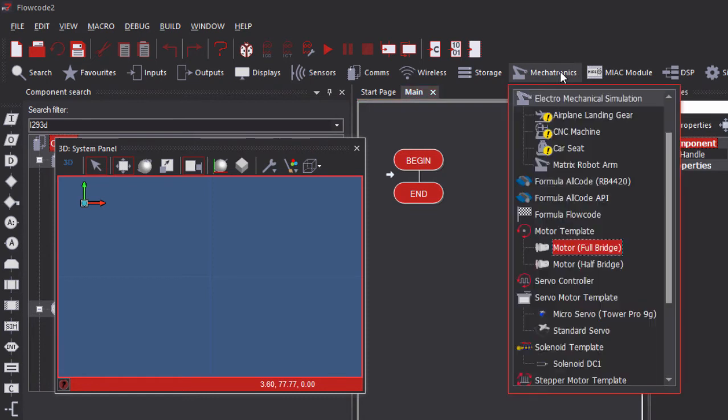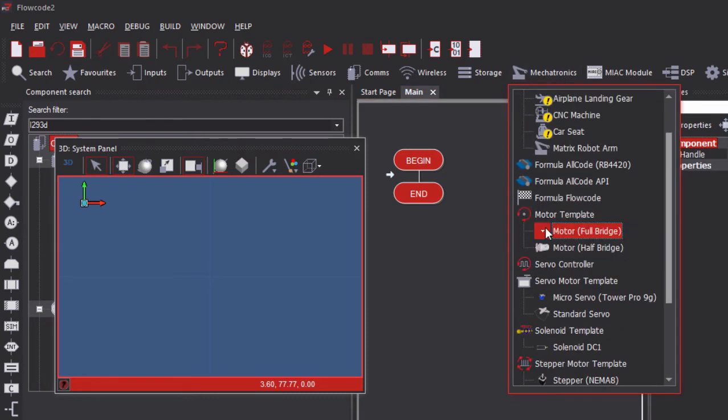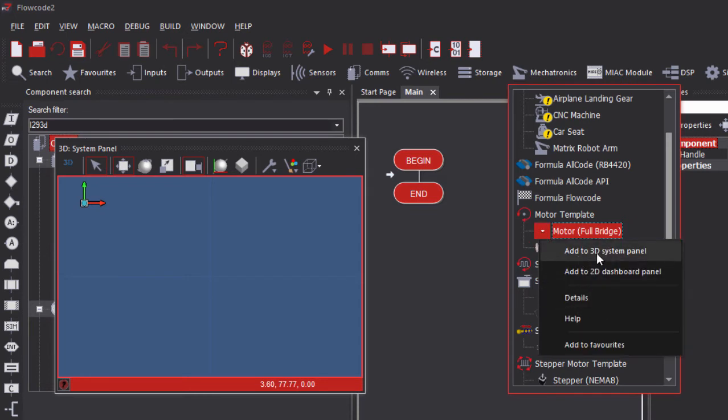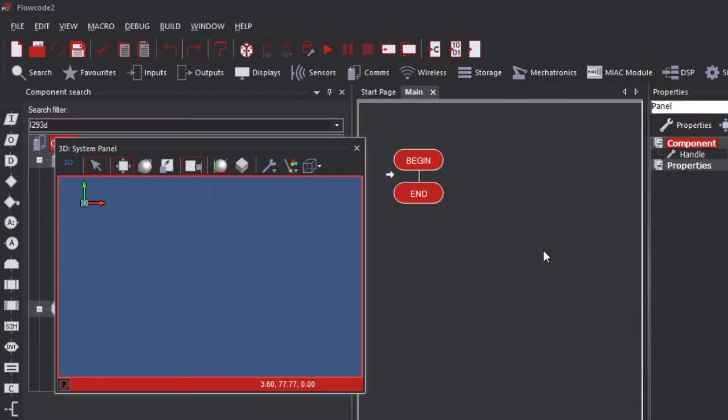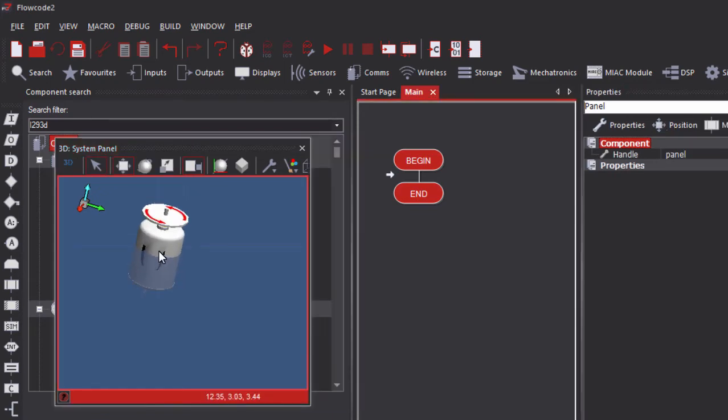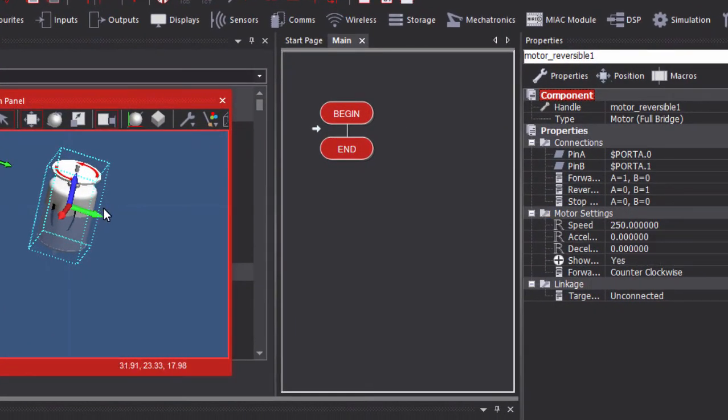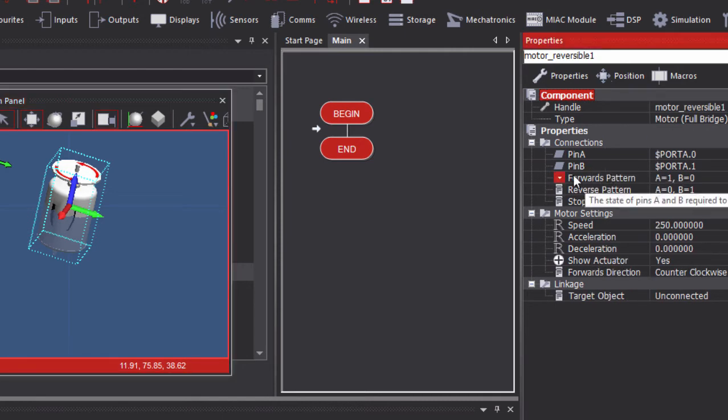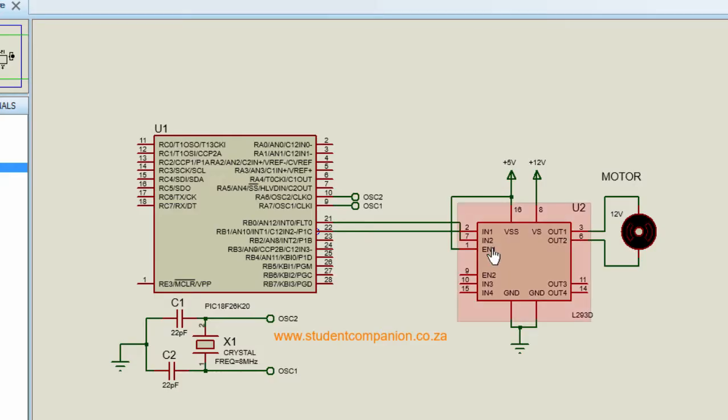Under the mechatronics, insert a motor template. We're going to use the full bridge motor and add it to the 3D system panel. Select the motor. This motor template enables us to control a motor with two pins: Pin A and Pin B. And this is the pattern to control this motor. Pin A we're going to connect it to Port B, as in our circuit diagram. We've got two pins, IN1 and IN2, to control our motor connected to Port RB0 and RB1. So Pin A we're going to connect it to Port B0 and Pin B to Port B Pin 1.